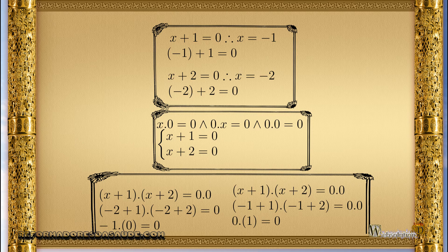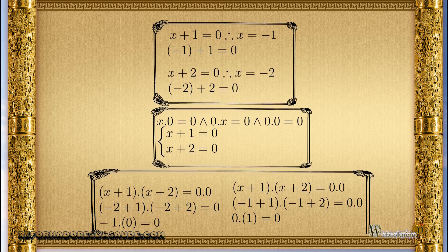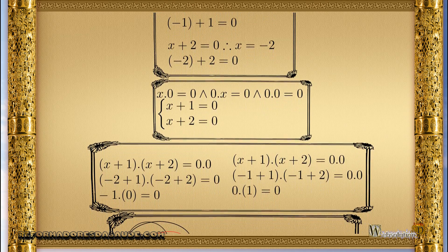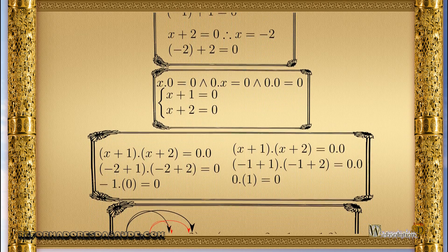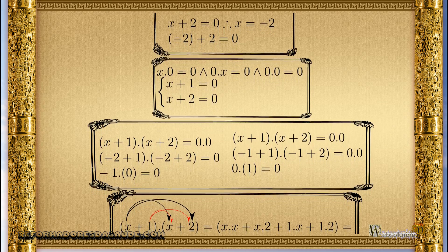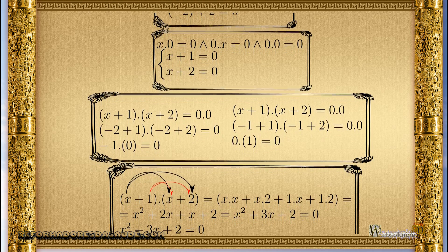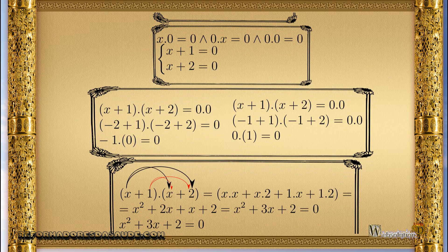A second-degree equation is the product of two first-degree equations. When we multiply two first-degree equations, we have a second-degree equation. We must bear in mind the characteristics of multiplication by zero: x times 0 equals 0, 0 times x equals 0, and 0 times 0 equals 0.